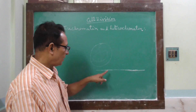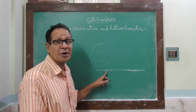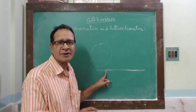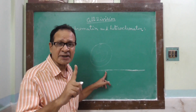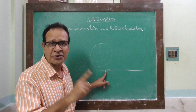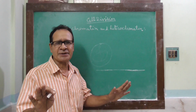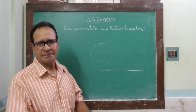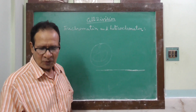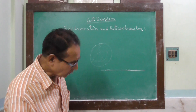These euchromatin parts are the functional genes and can synthesize RNA, while heterochromatin parts are genetically inert and cannot synthesize RNA.